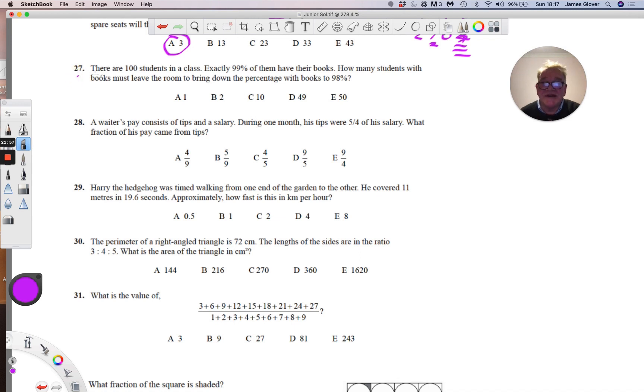This little question is quite a bit tricky. There are 100 students in a class, exactly 99% of them have their books. That means 99 have their books and one does not. How many students with books must leave the room to bring the total percentage with books down to 98? You may think one, but no it's not.